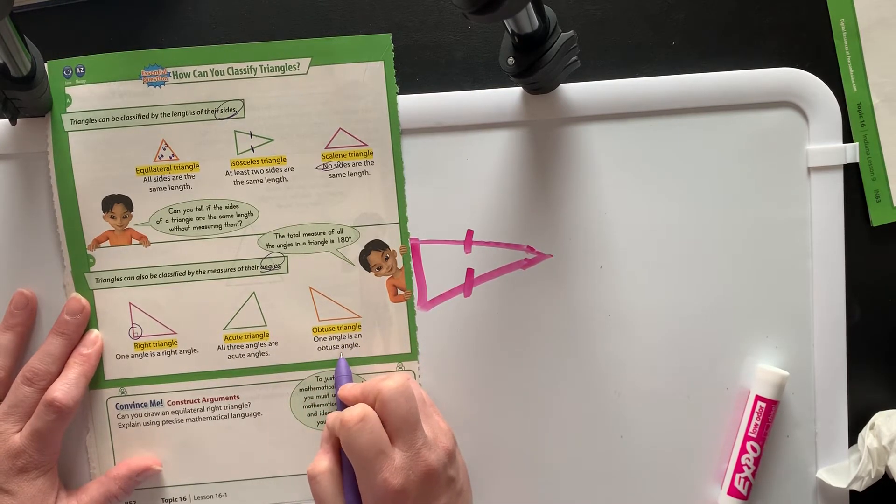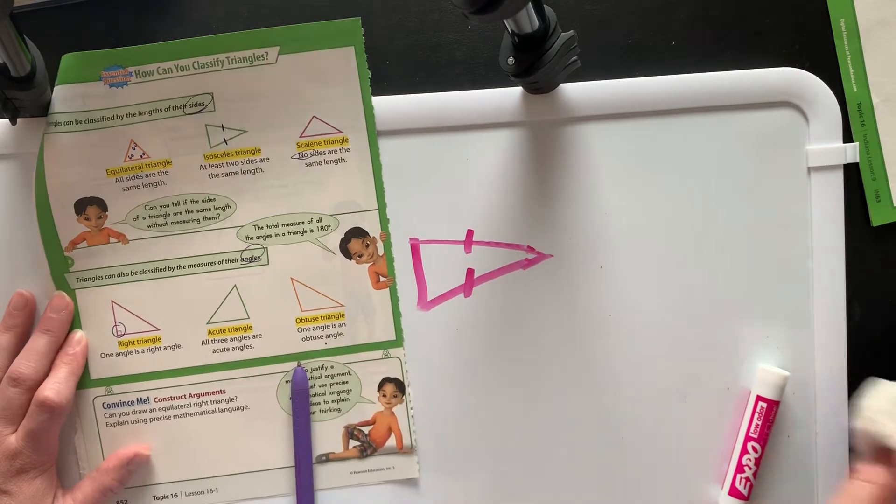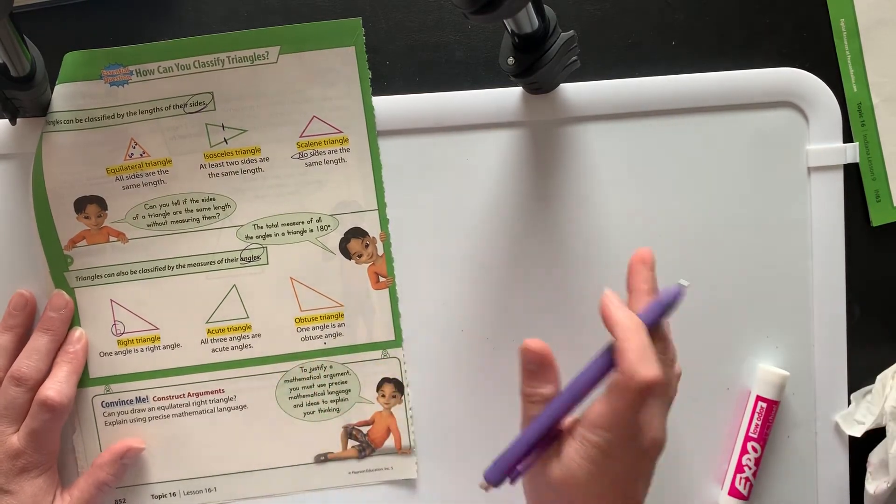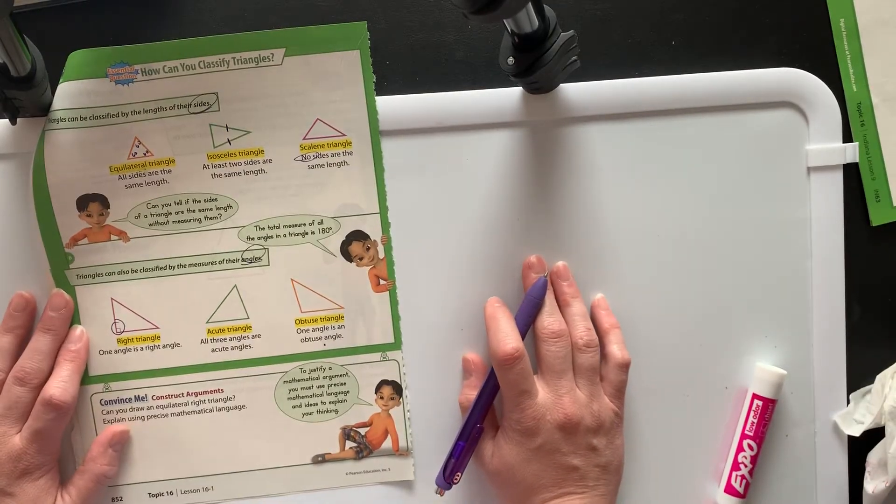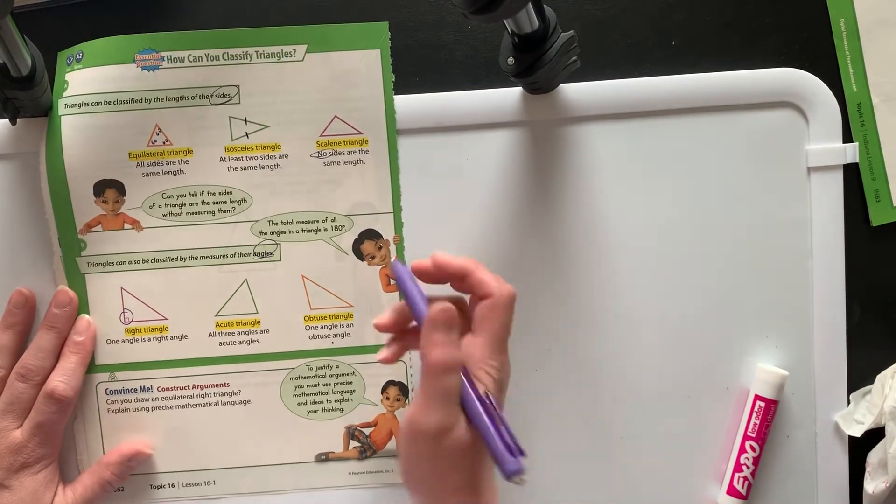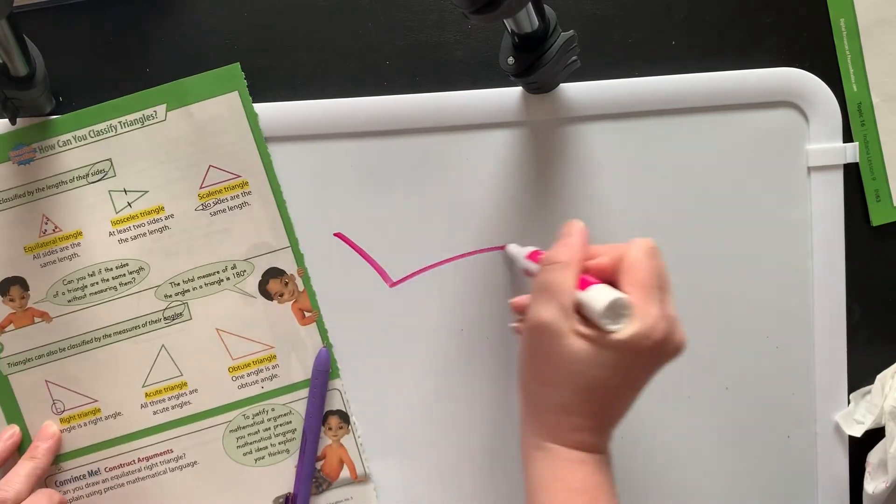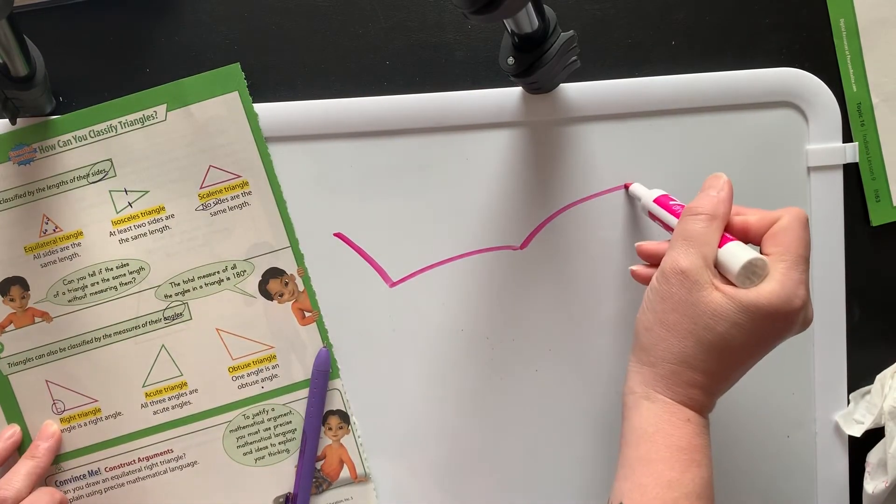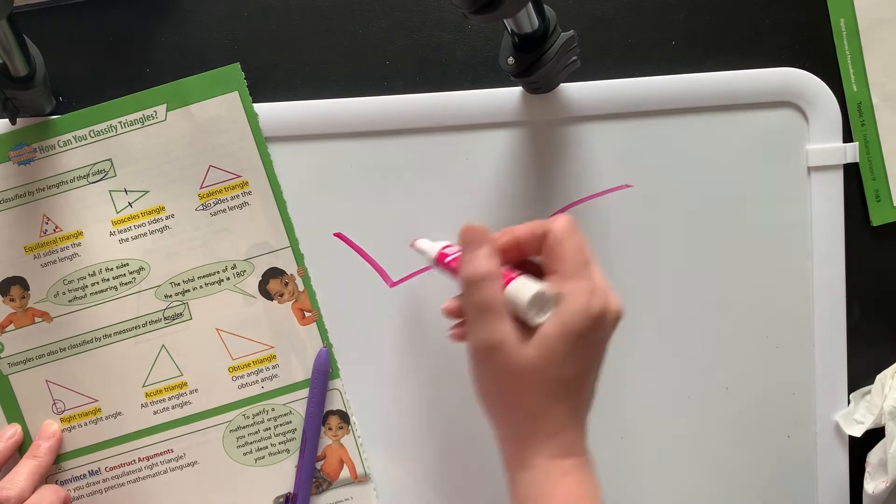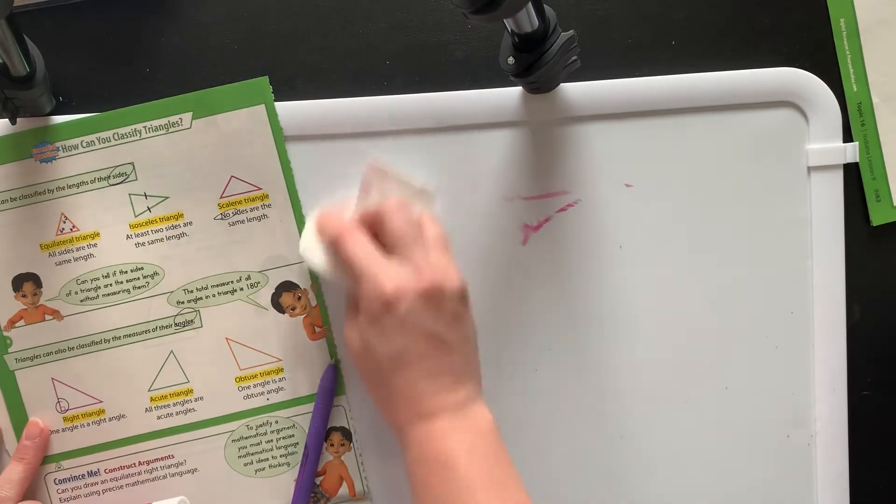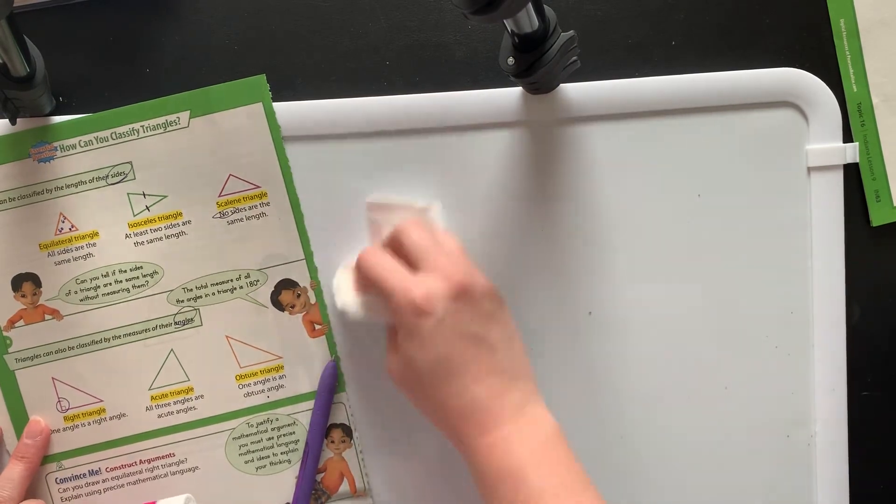I had a kid one time who was just convinced that he could draw two obtuse angles in one triangle. And I was like, dude, if you can do it, I'll give you $100. And he was like, all right. He spent like two days and he never could. Because when you draw an obtuse angle, and then you try to draw another obtuse angle, you just never get back over. You can never make that into a three-sided figure or a triangle. So I remember that kid, his name was Dakota.